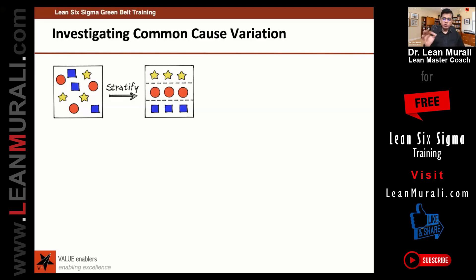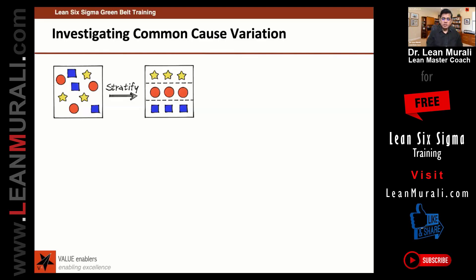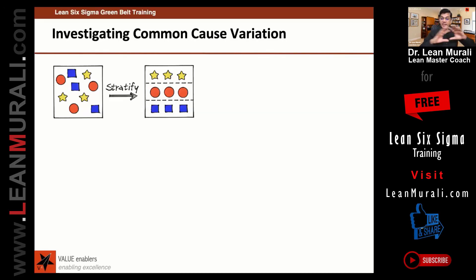One of the strategies for investigating common causes is stratification. Here, stratification is easy because you can see visually the stars, the red circles, the blue squares. So it's very easy to classify stars separately, apples separately, oranges separately, bananas separately — it's very easy to stratify.